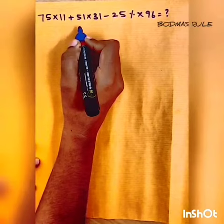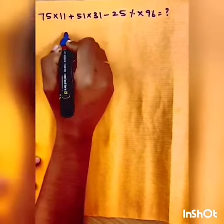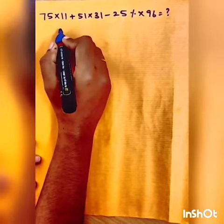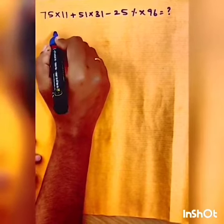Today we will see how to solve this simplification sum in easy method. First step is to solve 75 by 11. This is the easiest shortcut method.